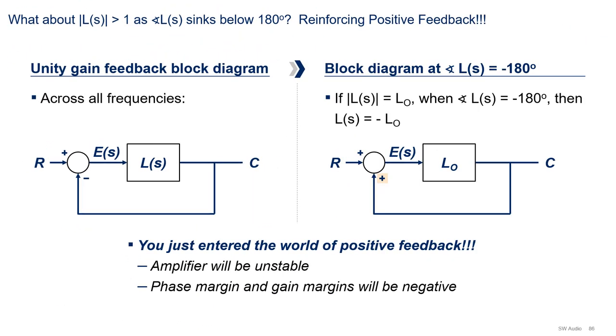Until now, we've been talking a lot about the point where the loop gain equals -1. But what happens when you go past this condition? In other words, when the magnitude of the loop gain is greater than 1 as the phase of the loop gain sinks below 180 degrees. Well, when you hit this condition, you have entered the world of positive feedback. Your amplifier will be unstable, it may blow up, let some smoke out, possibly burn your house, and the phase and gain margins for the system will be negative. Let's understand why it's positive feedback.